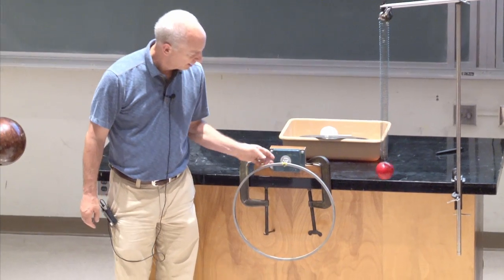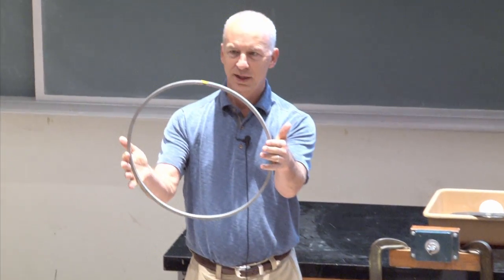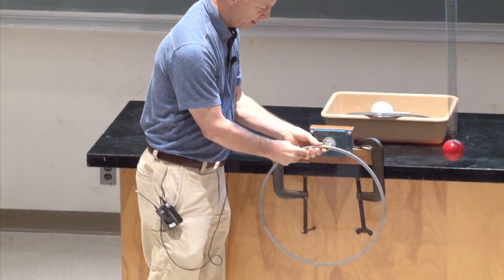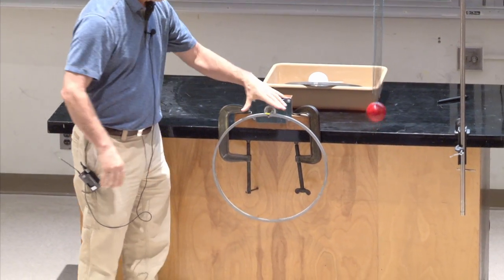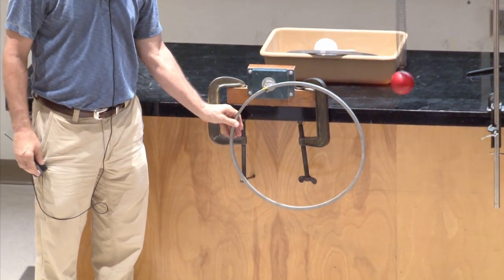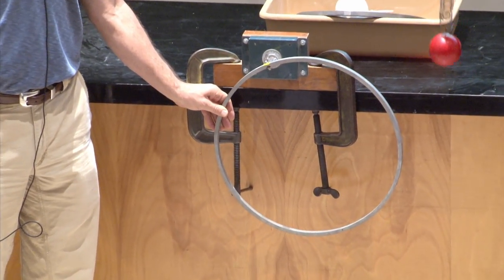And there are lots of other things that oscillate. This little wheel right here can hang from a sharp point, from a fulcrum. And if I twist it out of equilibrium, there's a restoring torque.